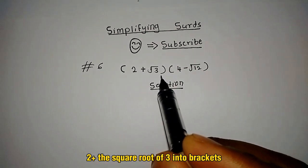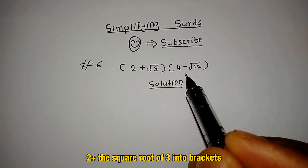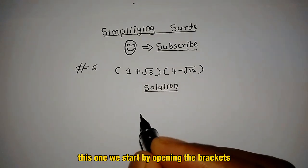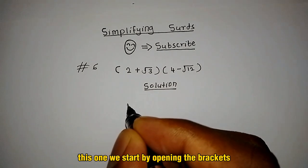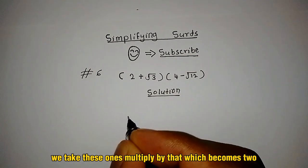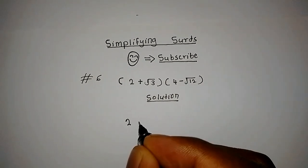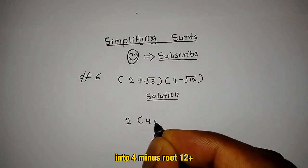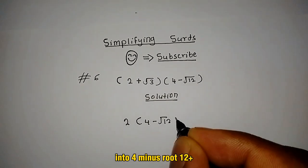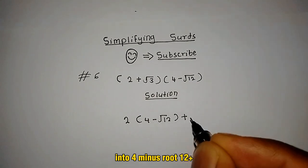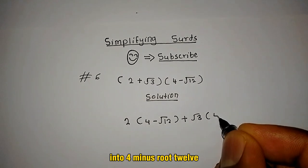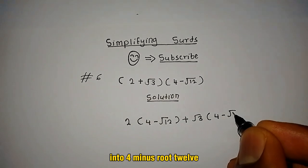2 plus the square root of 3, into brackets 4 minus the square root of 12. We start by opening the brackets — we take each term and multiply: 2 into 4 minus root 12, plus root 3 into 4 minus root 12.